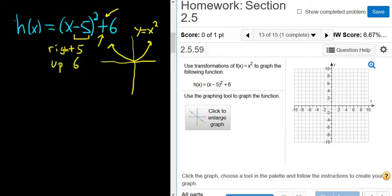Okay, if there was a minus here, it would be down 6. If there was a plus here, then it would be left 5. Okay, so now we're taking this picture, and we're shifting it right 5 and up 6.